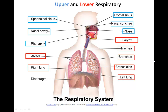Found in the upper respiratory are the sinuses. Examples shown here would be the sphenoidal and frontal sinuses. The nasal cavity, which has special bones known as nasal conchae. The nose and the pharynx.